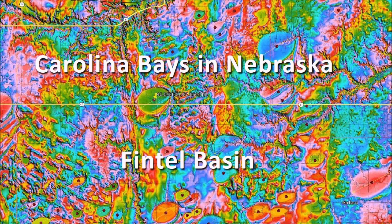Welcome to another edition of the Carolina Bay of the Day, where we study the secondary impacts made by the glacier ice boulders that were ejected by an extraterrestrial impact on the Laurentide Ice Sheet.